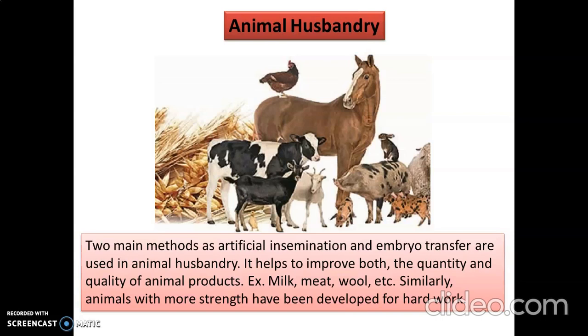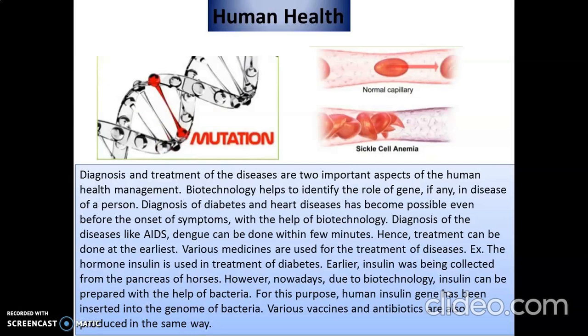The most important area is human health. Diagnosis and treatment of disease are two important aspects of human health management. Biotechnology helps identify the role of genes in a person's disease. Diagnosis of diabetes and heart disease can become possible even before the onset of symptoms with the help of biotechnology — even when the child is in the mother's womb. Diagnosis of diseases like AIDS and dengue can also be done within a few minutes.